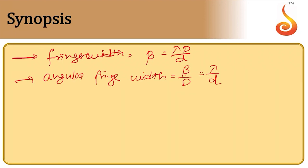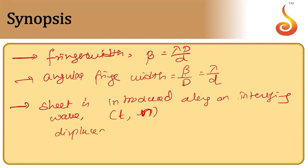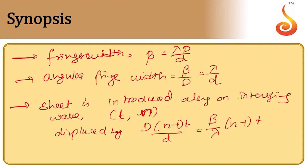If a transparent sheet of thickness t and refractive index n is introduced along one of the interfering waves, the fringe pattern is displaced by D(n-1)t/d, which equals beta(n-1)t/lambda. The shift is towards the side where the sheet is introduced, but the fringe width remains the same.